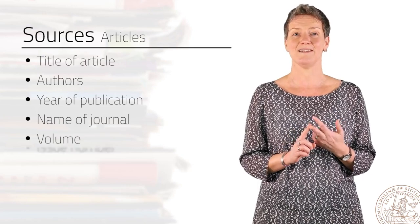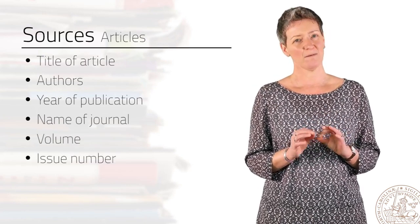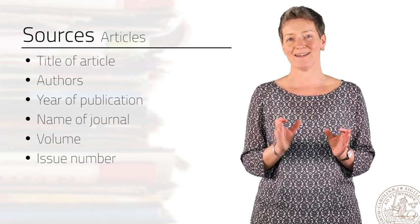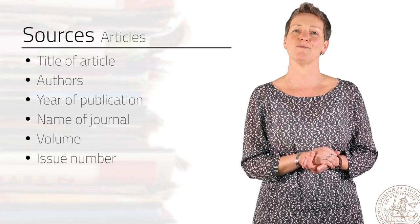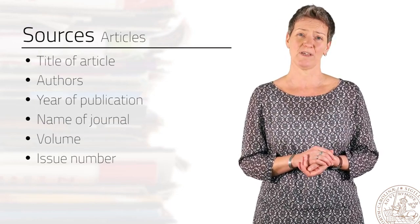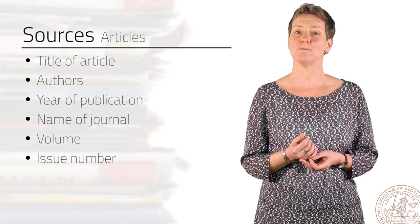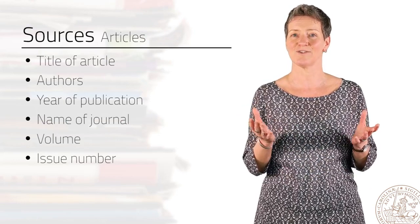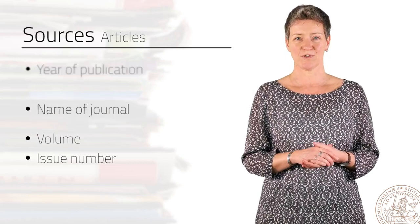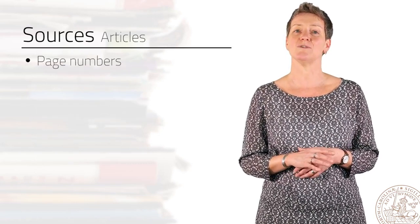But your reader also needs to know the journal in which the article was published, the volume, and the issue number. These numbers make it easier to discern where exactly the article can be found, because a journal can publish several issues per year, and it may have published one volume per year since the 1800s, for example. Also, you need to give the page numbers of the article you've used.